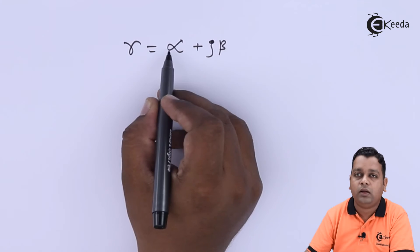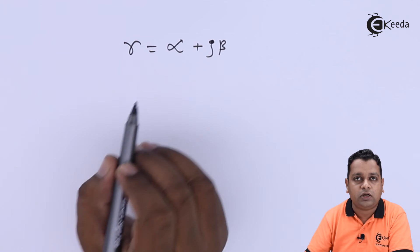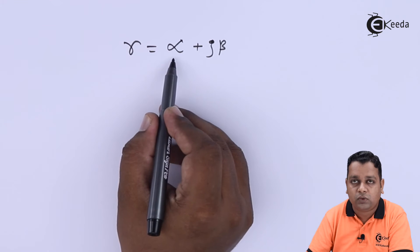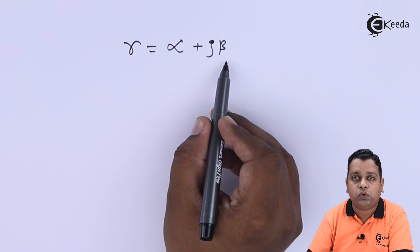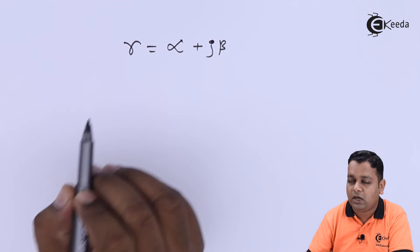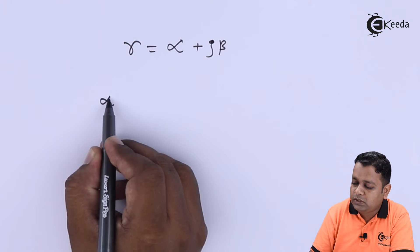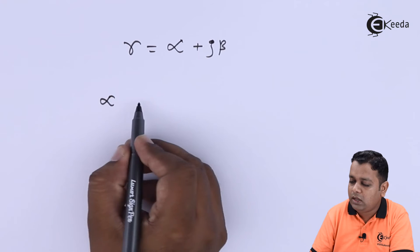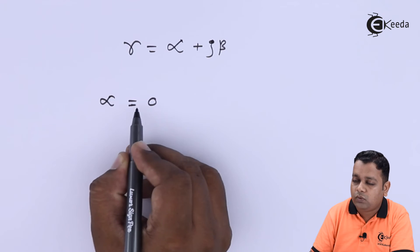α is accounting for the attenuation, hence it is called the attenuation constant. β is called the phase shift constant. γ is the propagation constant. For free space or lossless dielectric, α is always equal to zero for microwave propagation.